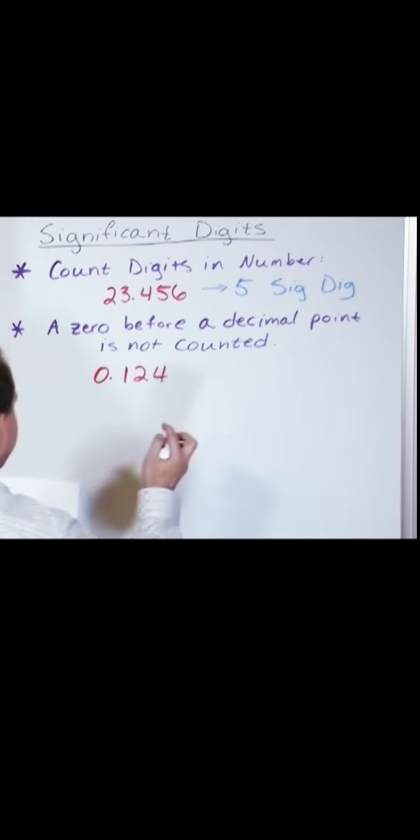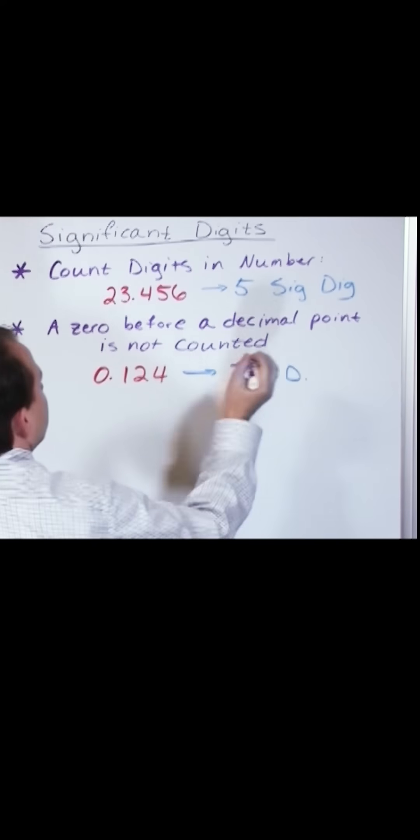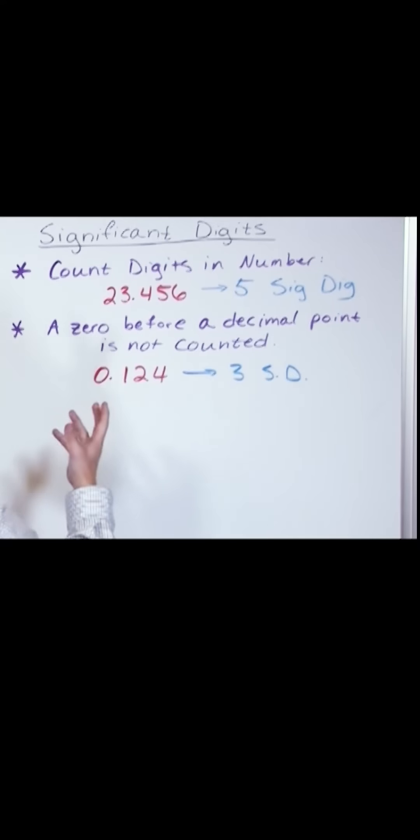0.124. There's actually three significant digits in this guy. Now you might say, why? It's an accepted standard. When there's a zero in front of a decimal point, you don't count it.